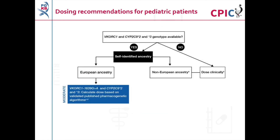These are the CPIC dosing recommendations for warfarin in paediatric patients, shown in figure 3 of the guideline publication. For patients with self-identified European ancestry who have been genotyped for VKORC1 and the CYP2C9 star 2 and star 3 alleles, there is a moderate recommendation to calculate warfarin dose based on validated published pharmacogenetic algorithms.